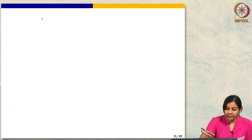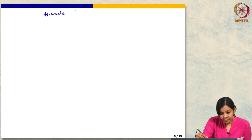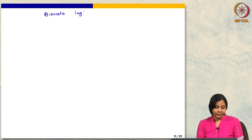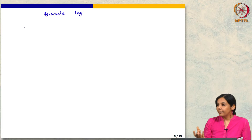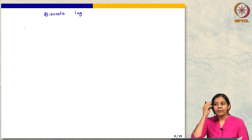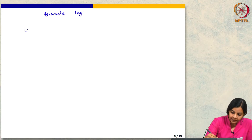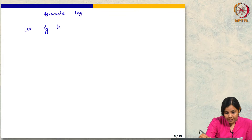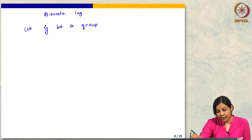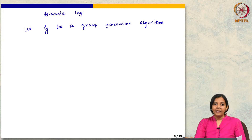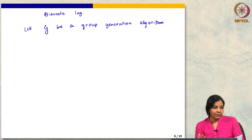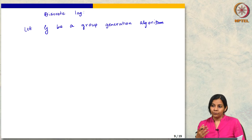Now let us look at the discrete log and relatives. What I want to do is use cyclic groups, preferably with prime order. It is not always necessary to use prime order, but for simplicity let us assume that. Let G be a group generation algorithm — this is similar to what we had for RSA and factoring, like the modulus generation. We have a group generation algorithm which takes the size of the problem, some n, and outputs a cyclic group of that order, and a generator for that group.